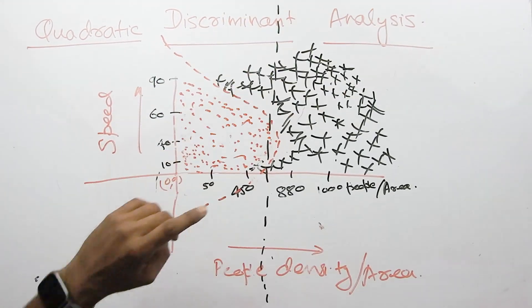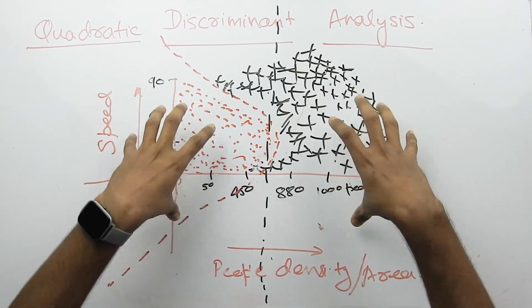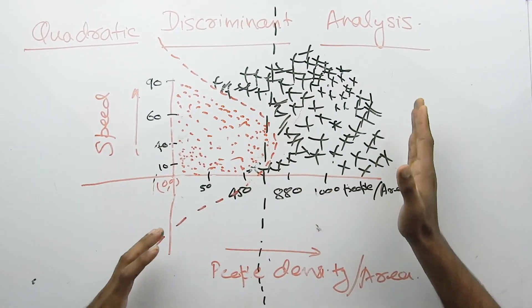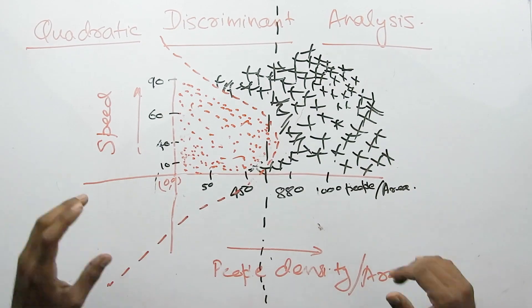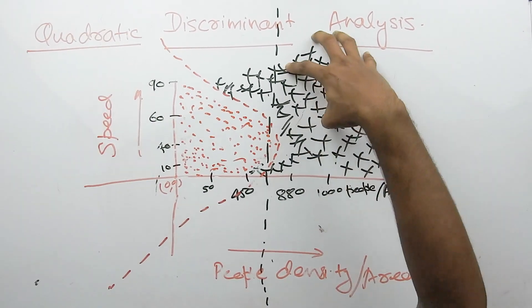Quadratic Discriminant Analysis - what happens in this analysis? This is real data from Delhi Police. What did they tell us? If the density of the area is more, and if the speed of the area is more, then there are deaths.